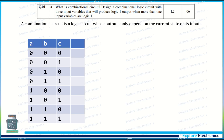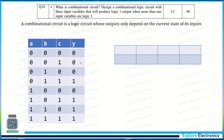A combinational circuit is a logic circuit whose output depends only on the current state of inputs — it does not depend on previous inputs or previous outputs. For this question, we need to design the combinational circuit by taking three input variables A, B, C. We need the output Y to be one when more than one of these three inputs is one.